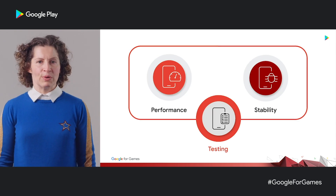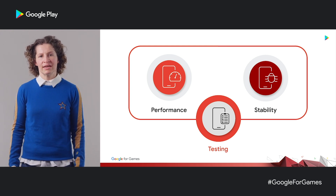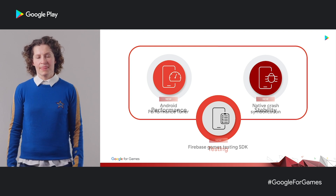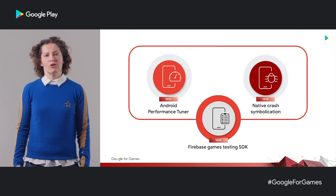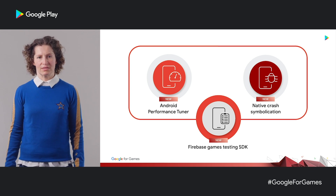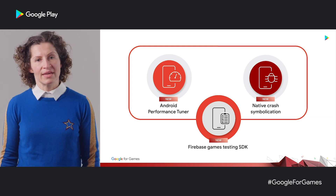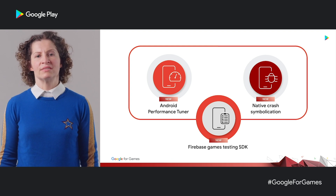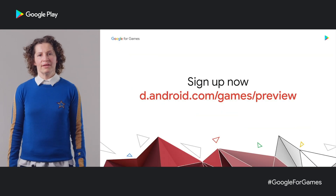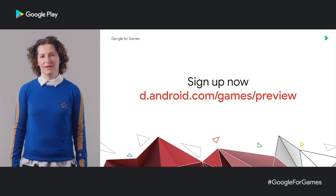As I said at the start, we want to help you build higher quality games that reach more users. Each of the tools I've walked through plays a specific role in this process. With Android Performance Tuner, you can optimize your frame rate performance and fidelity across the whole Android ecosystem. With native crash symbolication, you can debug your stability issues more easily. And with a game loop, you can run automated testing at scale and cross-platform to prevent those performance and stability issues from reaching your users in the first place. If you're excited by what you've seen and heard today, please go to the link provided and express your interest. I'm looking forward to hearing from many of you. Thank you for listening.